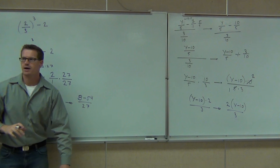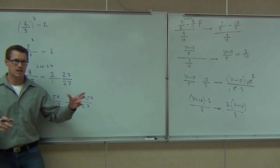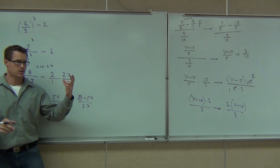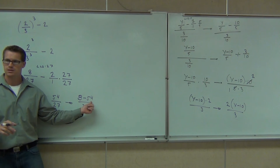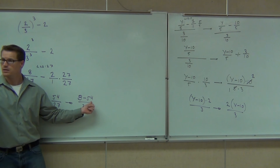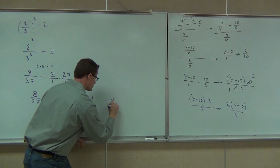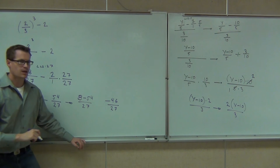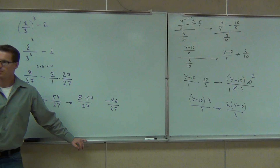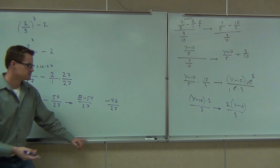After we do this step, we're back down to subtracting fractions, which we've done in this class already. We're going to have 8 minus 54 over 27. We can change it to plus a negative and combine with the addition rule. So that's negative 46 over 27. You would try to simplify it, but you can't simplify that one.